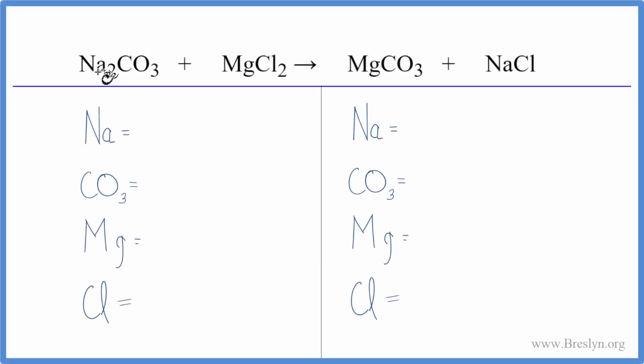In this double displacement reaction we have sodium carbonate plus magnesium chloride. So let's count the atoms up and balance the equation. We have two sodiums and then this CO3, it's called a carbonate ion, we have it here and